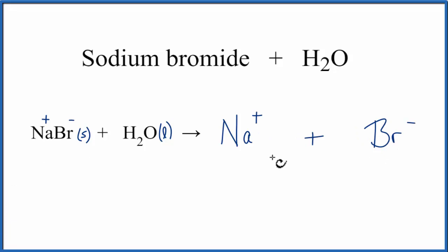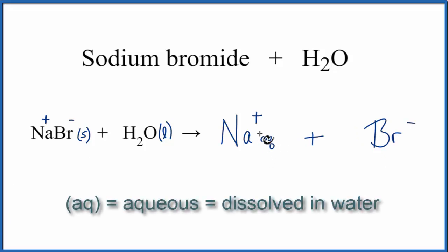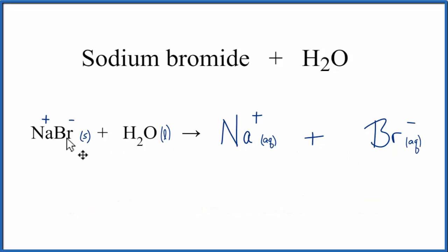To show that these are dissolved in water, we write Aq after it. Aq stands for aqueous, or dissolved in water. Since we wrote aqueous here, we don't need to write H2O on the other side of the equation. The aqueous notation shows that when these ions dissociated, they're now dissolved in water. That's the equation for sodium bromide plus water. This is Dr. B, and thanks for watching.